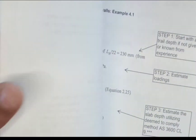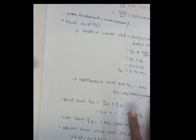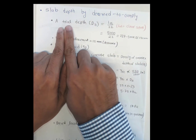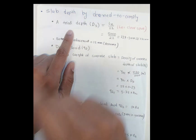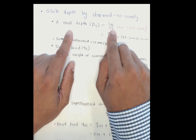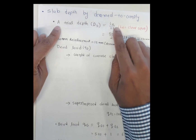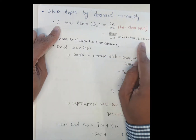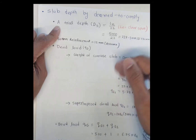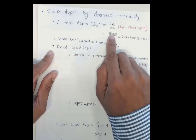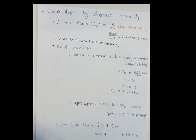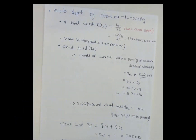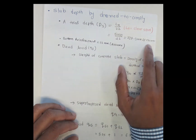To solve this example we need to make some assumptions. We will use the slab depth-to-d method from the standard. For the trial depth ds, by experience we use ln over 22 as a starting point for one-way slabs. ln is 5000 millimeters as given in the question. Dividing by 22 gives approximately 230 millimeters — that is our starting trial depth. If needed, we repeat the iterative procedure to confirm this value.